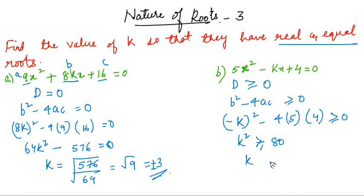So the root when it takes, it takes both positive and negative value when you have root 80. So basically k is greater than or equal to plus root 80 or k is less than or equal to negative root 80.